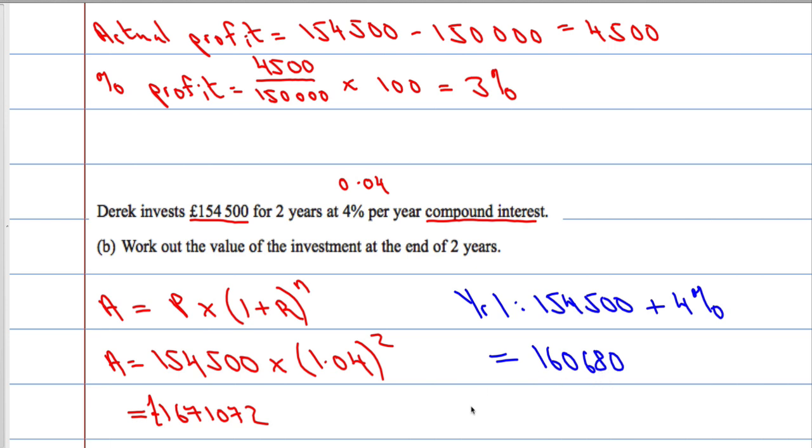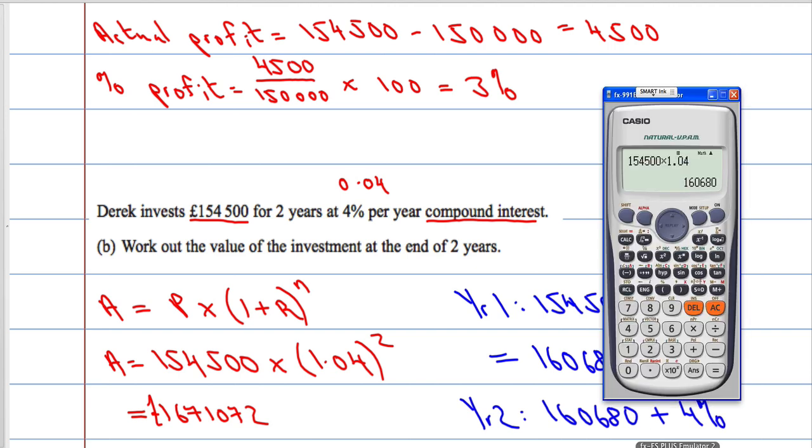So that's the end of year one, that's what he has. And then at the end of year two, he has £160,680, so he's getting interest on this now, the value of 4%. So I'm going to multiply that, multiply my answer by 1.04, increase it by 4%.